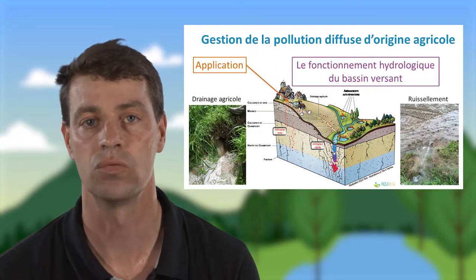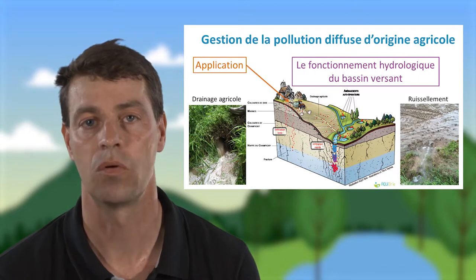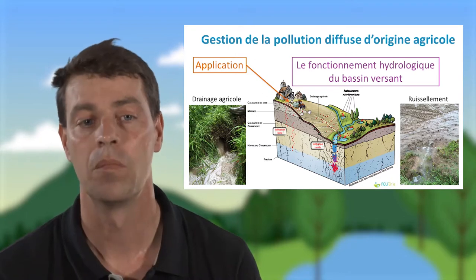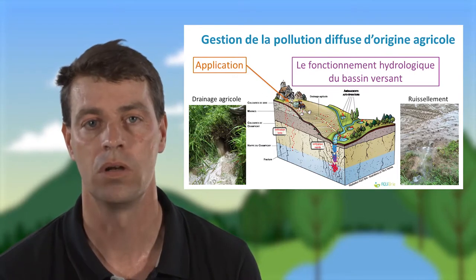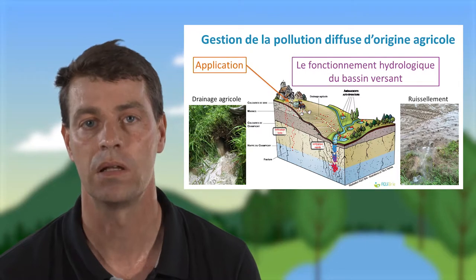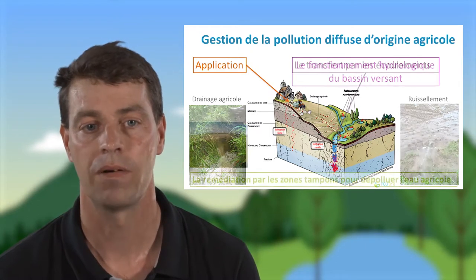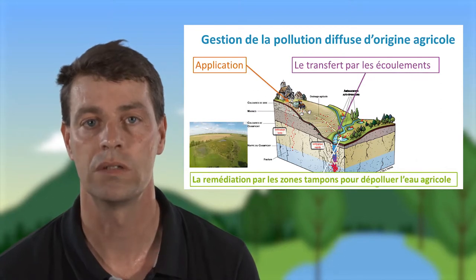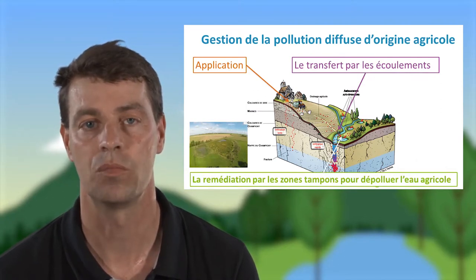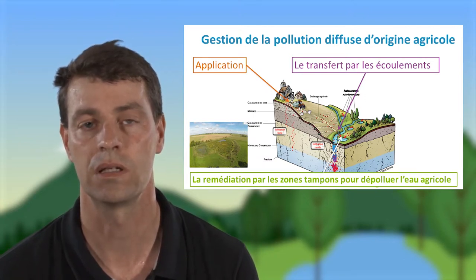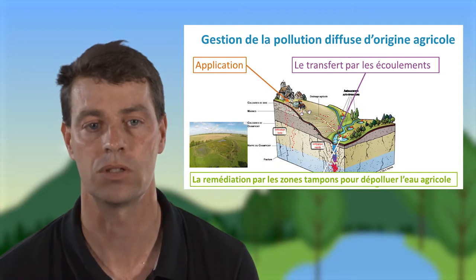Ce fonctionnement se constitue en trois parties, notamment le ruissellement de surface qui nécessite des gestions à la parcelle, mais aussi le drainage agricole qui va entraîner les contaminants depuis les parcelles agricoles jusqu'au milieu récepteur. Face à cela, des objectifs de remédiation à partir des éléments du paysage comme les zones tampons peuvent servir à dépolluer l'eau agricole en mimant les services écosystémiques liés aux éléments naturels du paysage.